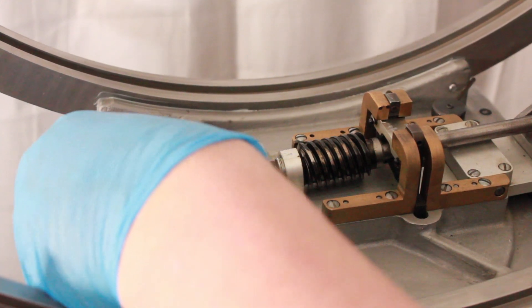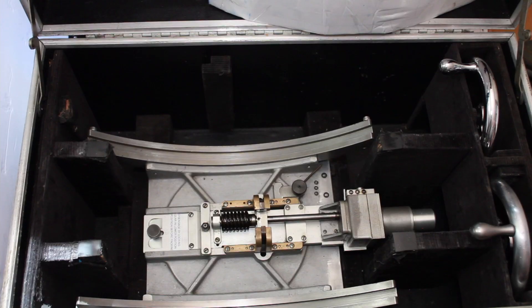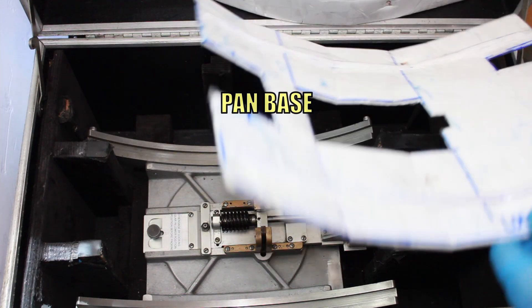Disengage the small gear by sliding the plate back. Place pan base in case.